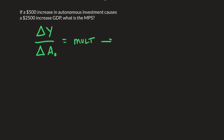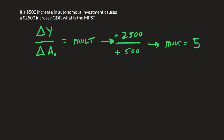This tells us that if there was a $2,500 increase happening because there was a $500 increase, the spending multiplier is going to be equal to 5.